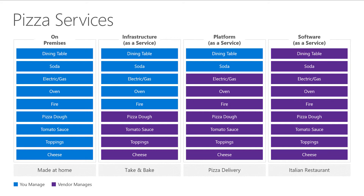In platform as a service, this equates to the pizza delivery model. I'm placing an order and the guy shows up at the door — pizzas are already baked. All I need to do is use my own dining room table and my own soda to consume that pizza. And then in software as a service, this is essentially the Italian restaurant version, where the vendor is providing everything for me. That is hopefully a better way to understand the difference between infrastructure as a service, platform as a service, and software as a service.